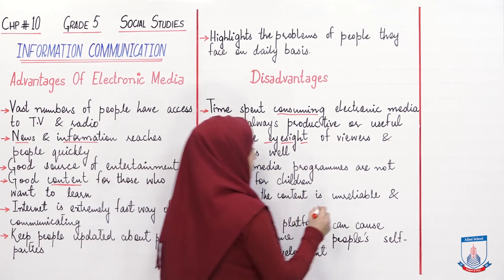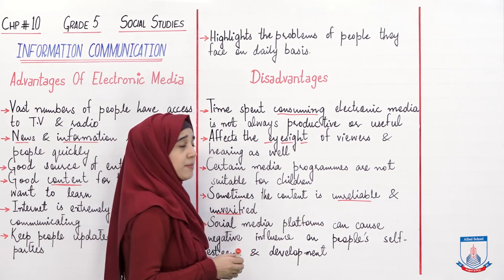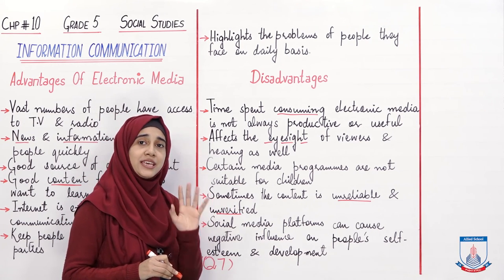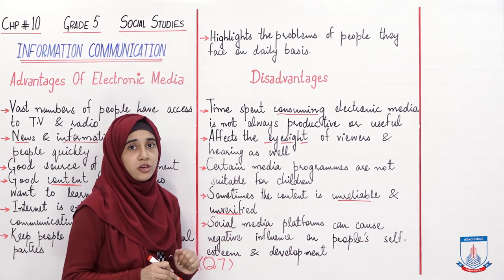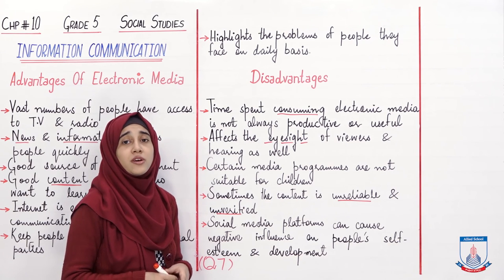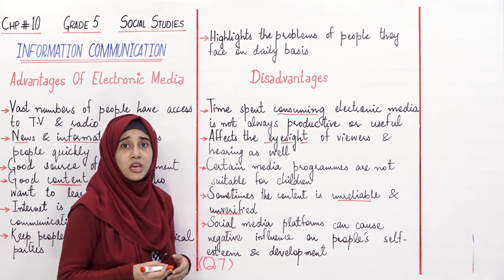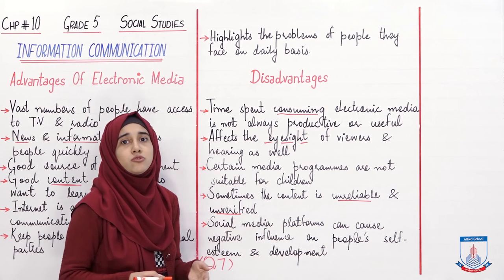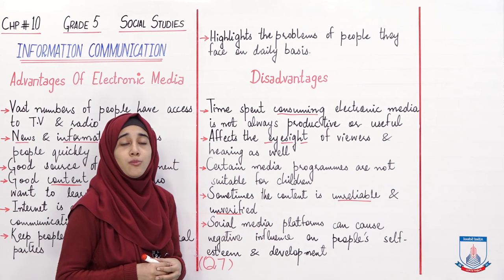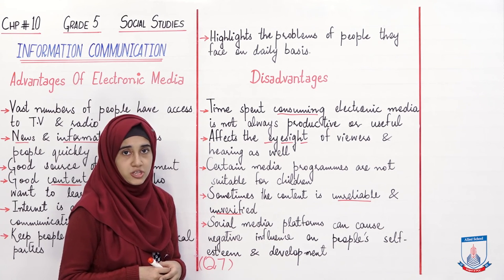Much of the information spread through electronic and social media is unreliable and unverified. You cannot say with certainty that what is being told is completely accurate. On social media and electronic media, many things are exaggerated or events are described that never actually happened. This is a major disadvantage because it spreads lies, harms the environment, and causes damage to people.